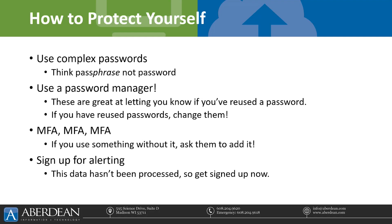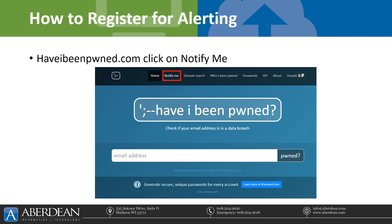The last thing you can do is sign up for alerting. This data hasn't been fully processed yet, so go get signed up for alerting on your email — it's really easy to do. Just go to haveibeenpwned.com, click on 'Notify Me,' and type in your email. It's two steps. Any email that you're actively using to log into websites with, just do it. You can also type your email in where it says 'pwned?' and it will show you every breach that your email has been involved in that they have cataloged.